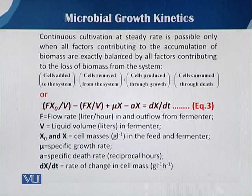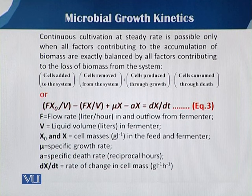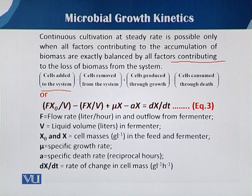Continuous culture or continuous cultivation at steady state is possible only when all factors contributing to the accumulation of biomass are exactly balanced by all factors contributing to its removal. This equation involves cell added to the system, cell removed from the system, cell produced through growth, and cell consumed as a result of death.